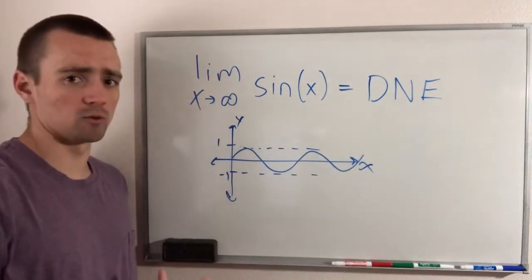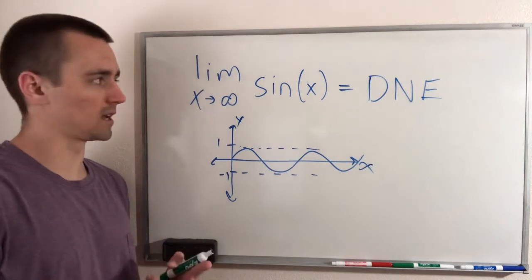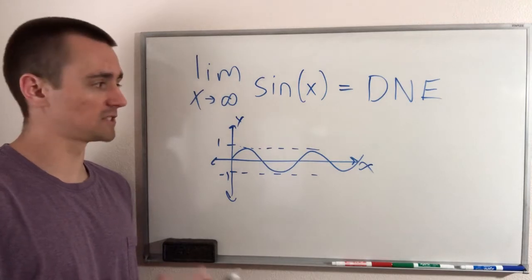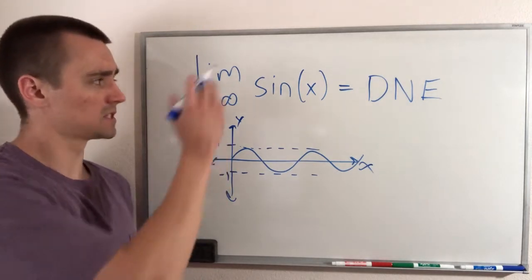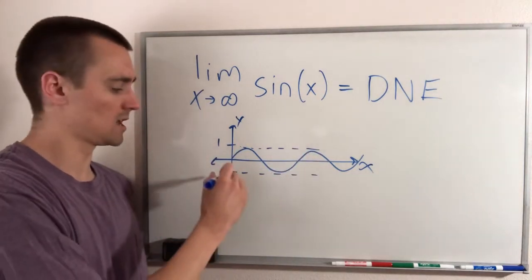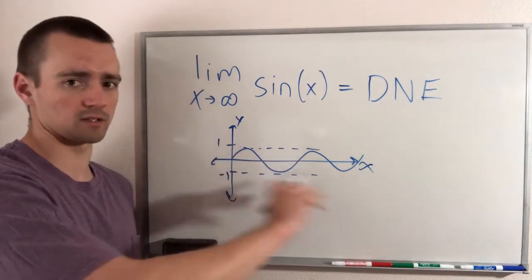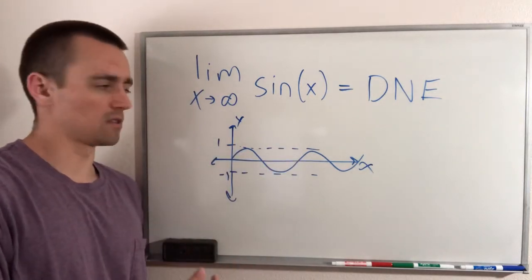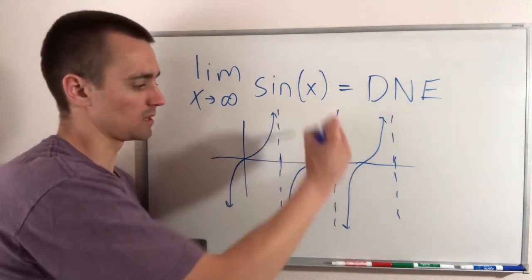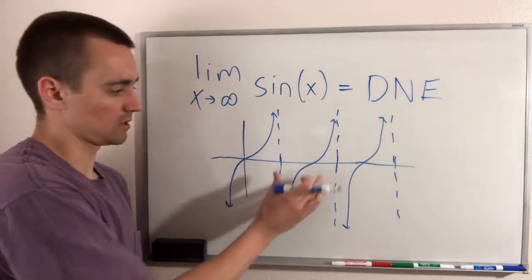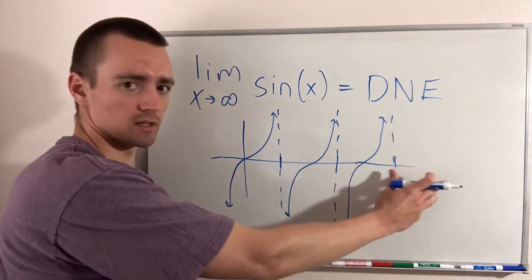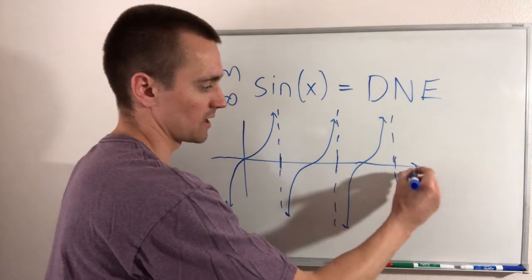The same idea would apply for cos x — the limit as x goes to infinity of cos x — and also the limit as x goes to infinity of tangent x. Sine and cosine both have the same kind of oscillating pattern, where they just go back and forth between negative one and one as x goes to infinity. Tangent does the same kind of thing, though it looks a little different — it has these pieces that repeat over and over every pi units, starting at pi over two.